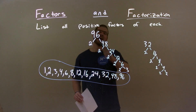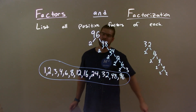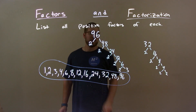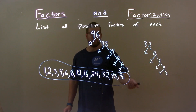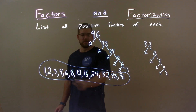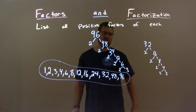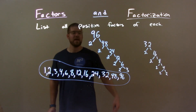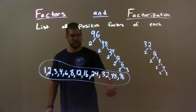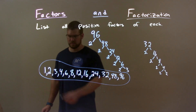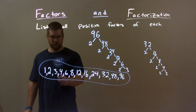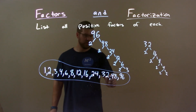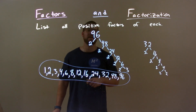Quick recap. We were given 96 and we found all the positive factors. I found the prime factorization and then found all the positive numbers that can be multiplied using the prime factorization, giving me the complete list: 1, 2, 3, 4, 6, 8, 12, 16, 24, 32, 48, and 96.